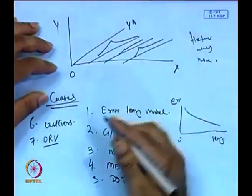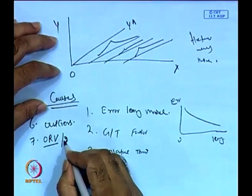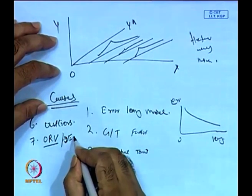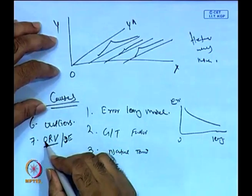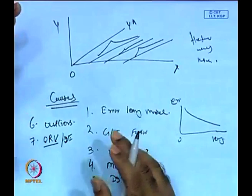You must be very careful about which relevant variables to include and which unnecessary variables to exclude. Necessary variables should be included and unnecessary variables should be excluded. If done the other way around, it will create heteroscedasticity problems.